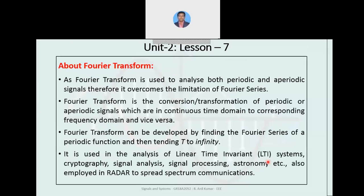Fourier transform is a conversion or transformation of periodic or aperiodic continuous time domain signals to a corresponding frequency domain and vice versa. So we are converting continuous time domain signals — either periodic or non-periodic — to frequency domain signals. Fourier transform can be developed by first finding the Fourier series for a periodic function, from which we can then obtain the Fourier transform.